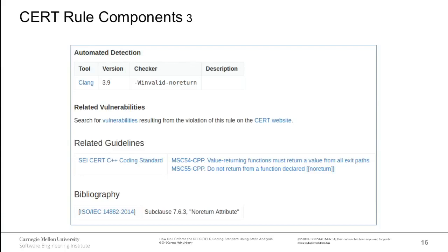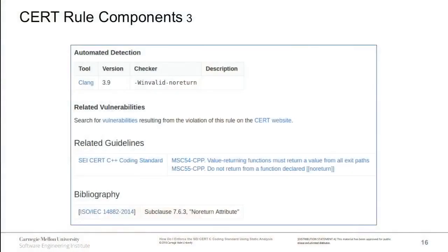At the bottom of each rule, there is boilerplate material. First, automated detection lists all software that can detect violations of the rule — for example, Clang with a specific warning, or Parasoft. We also list any real-world vulnerabilities that have arisen from this rule. We used to collect vulnerabilities for things like integer overflow but stopped because there were so many. Related guidelines link to other guidelines in the same or other languages, including MISRA.